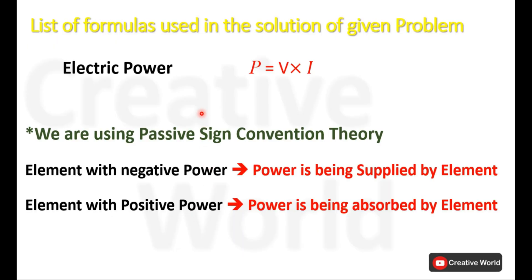In this problem we will be using electrical power formula and we also will be using passive sign convention theory. According to this theory, the element with negative power will be considered as power supplier and the element with positive power will be considered as power absorber.